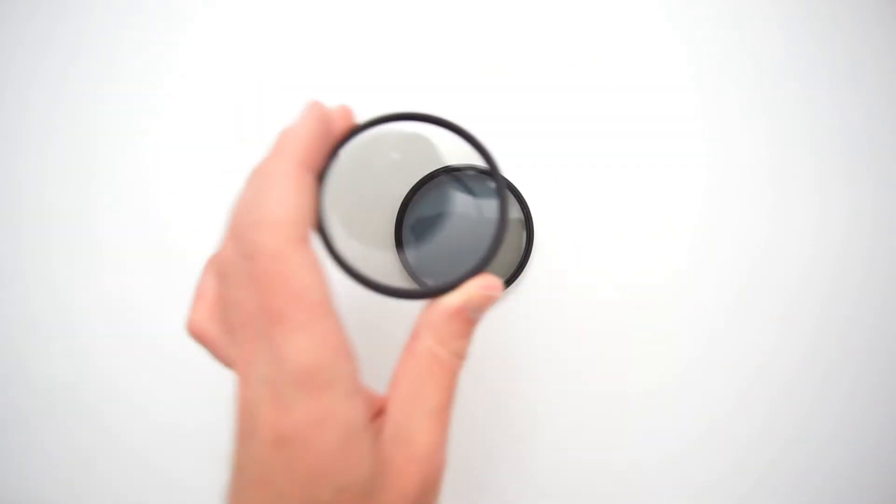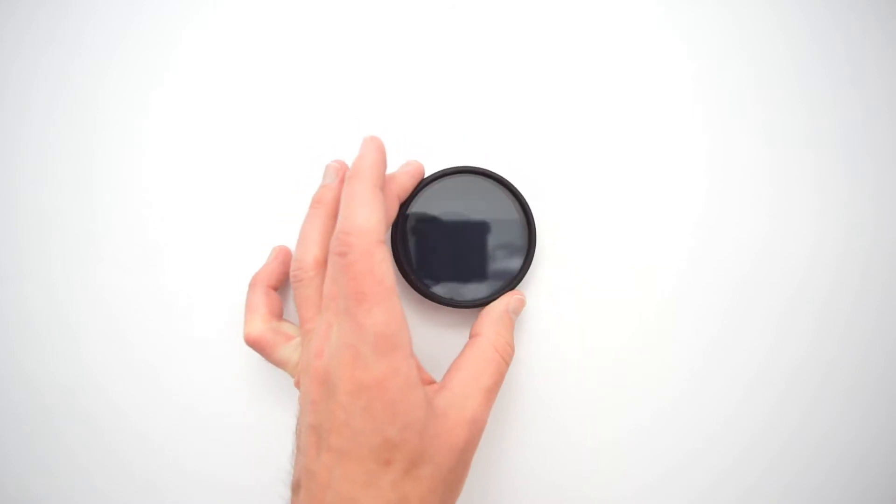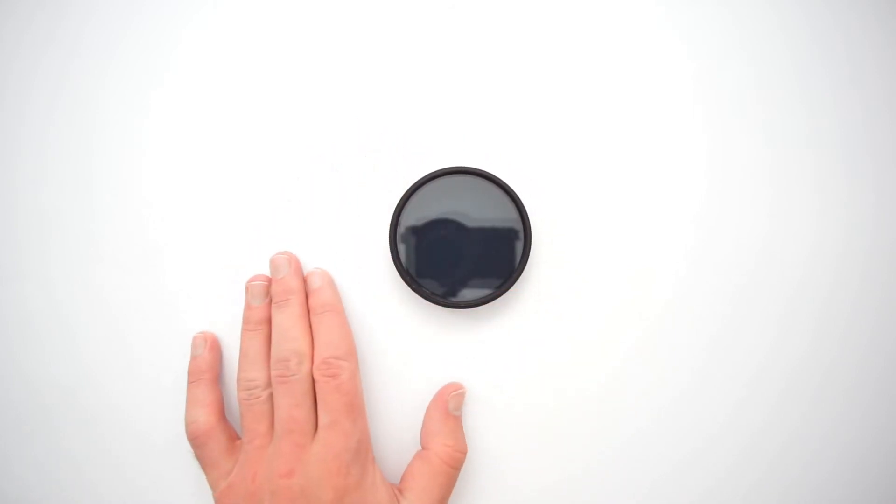You may think this is very easy. Simply stack two CPL filters one on another and your variable ND is done. Actually no, this is not as easy as you may think. Here we have two problems.